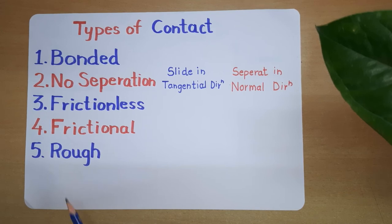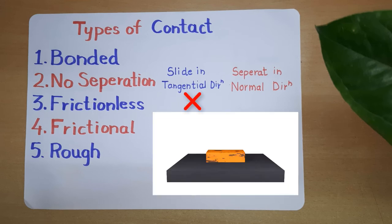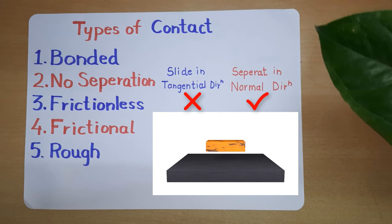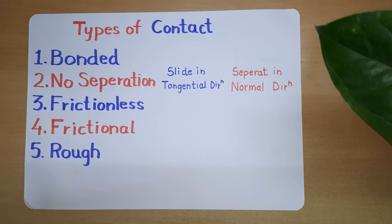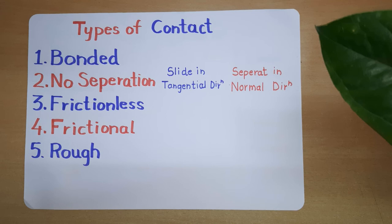Next is rough contact. Rough contact is a contact where bodies cannot slide in the tangential direction, but they can separate in the normal direction. That means there is a very high coefficient of friction — effectively infinity — so it will not slide in the tangential direction. Based on these two parameters, we define these five types of contact.